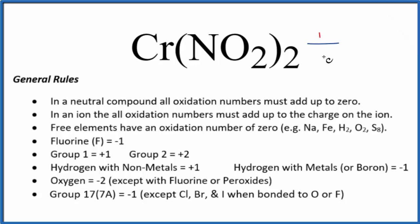First off, there's no negative or positive sign after the chromium 2 nitrite. That means it's a neutral compound. All the oxidation numbers, they'll add up to zero.